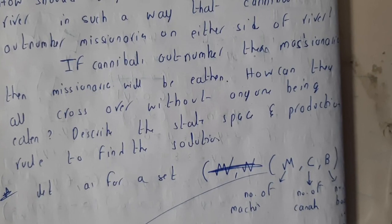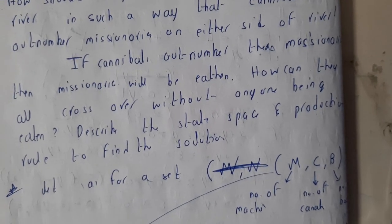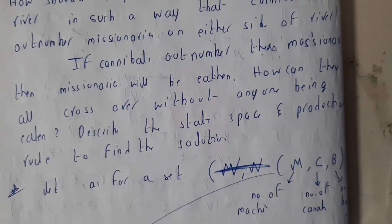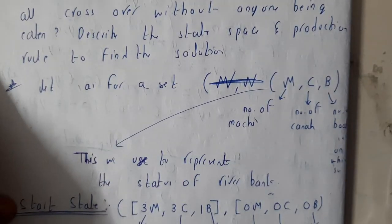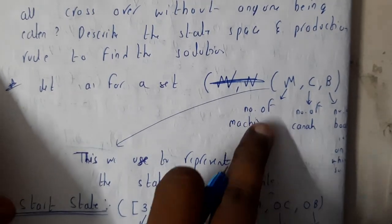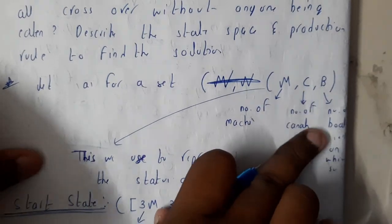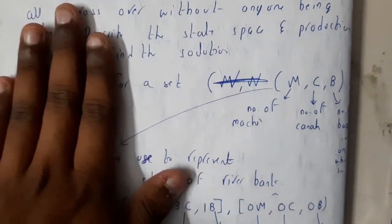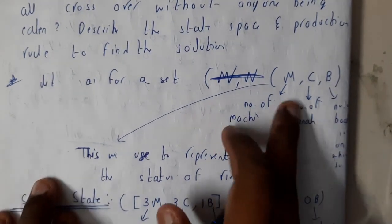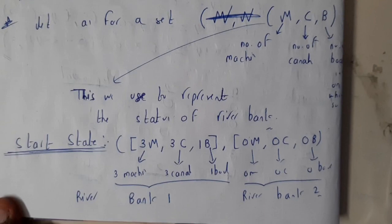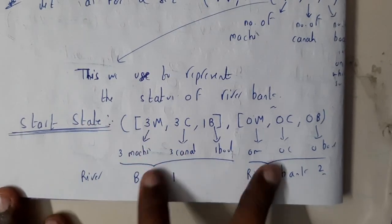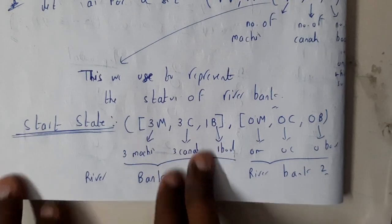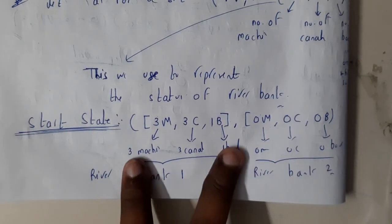Let us directly jump into the problem. Previously we discussed the water jar problem step by step, so you can watch that and come here to understand my teaching style. Initially let us assign letters: M will be the number of missionaries, C will be the number of cannibals, and B will be the boat position — whether it is on bank one or bank two. This represents the status of the river banks. At the start, three missionaries and three cannibals and the boat are all on bank one, and zero-zero-zero on bank two.